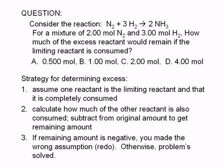If we get a negative remaining amount, then we know we made a wrong assumption. So we just go back to step one and assume that the other reactant is the limiting reactant. Otherwise, problem solved.